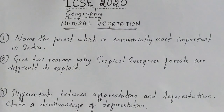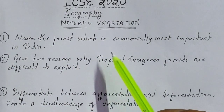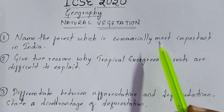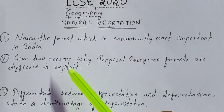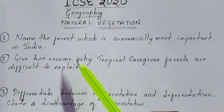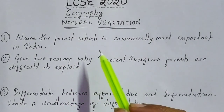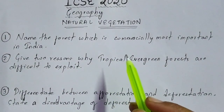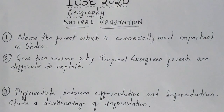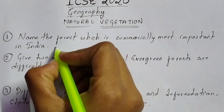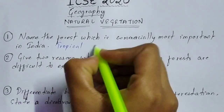Moving on to the first question: name the forest which is commercially most important in India. This is one of the most important questions, repeated most often in your board examination from natural vegetation. The forest which is commercially most valuable in India is tropical deciduous forest.